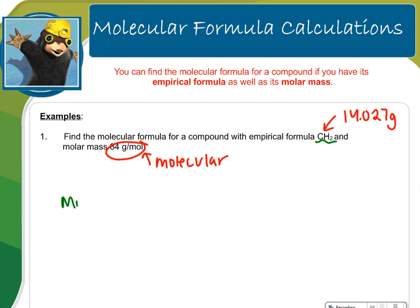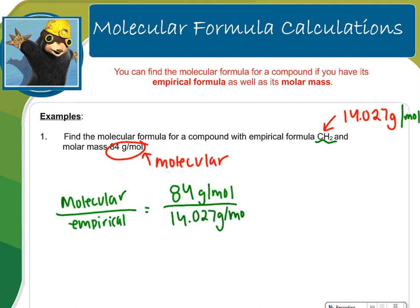Remember, you want molecular mass on the top and you want empirical on the bottom. So I know the molecular is 84 grams per mole, and then the empirical is 14.027 grams per mole. This is where I get that whole number. So when I divide, it actually gives me 5.98. It's okay to round up here. This is close to 6.